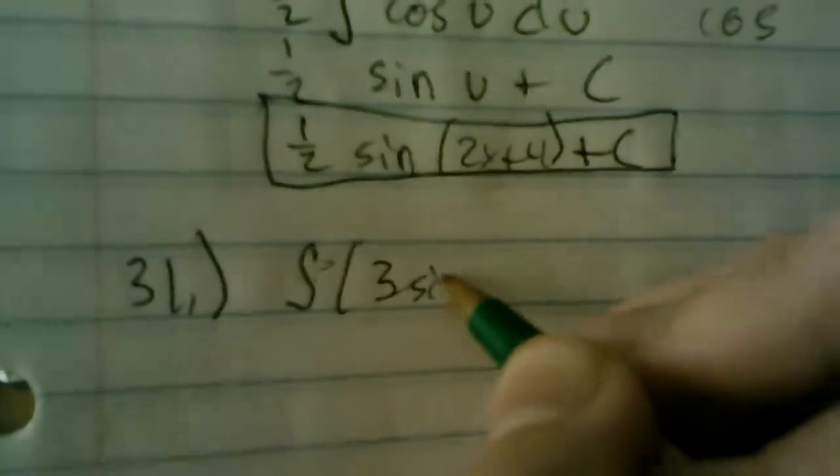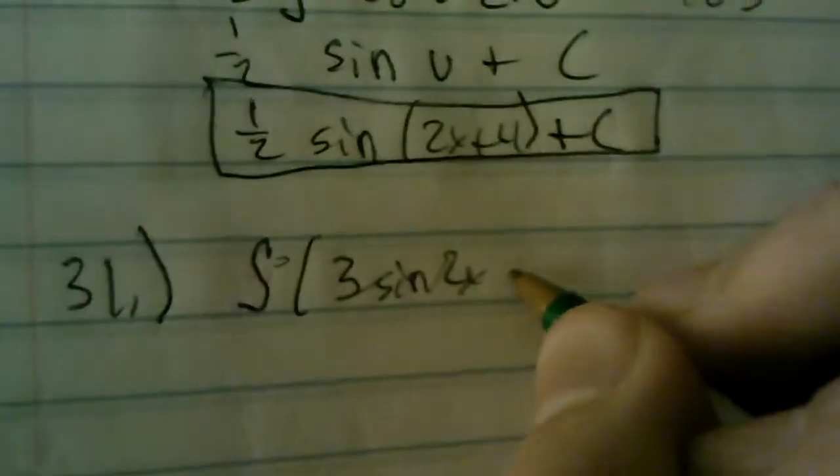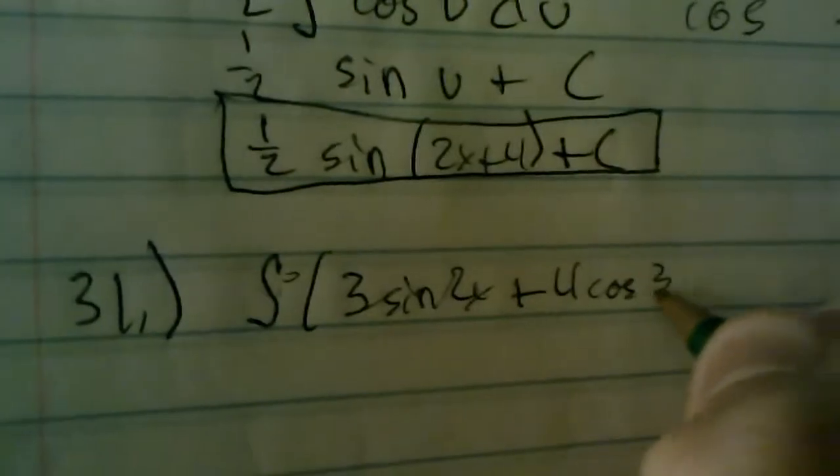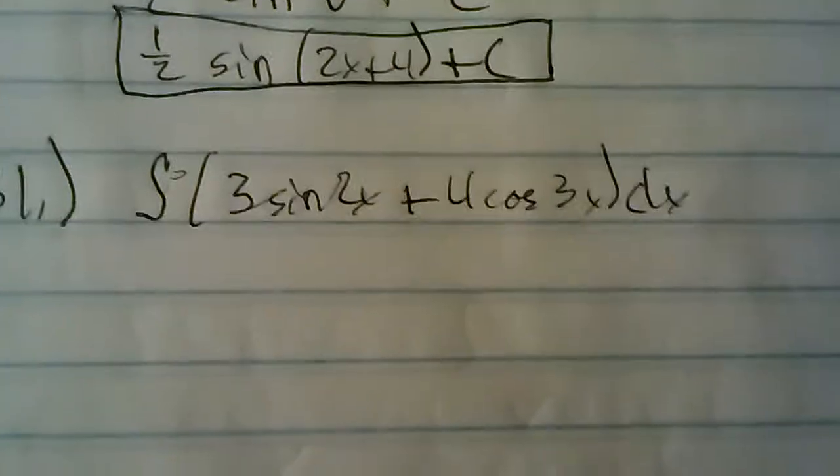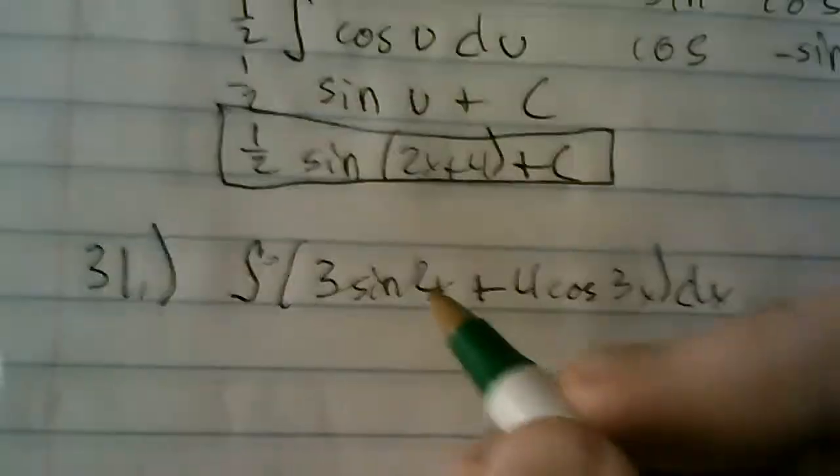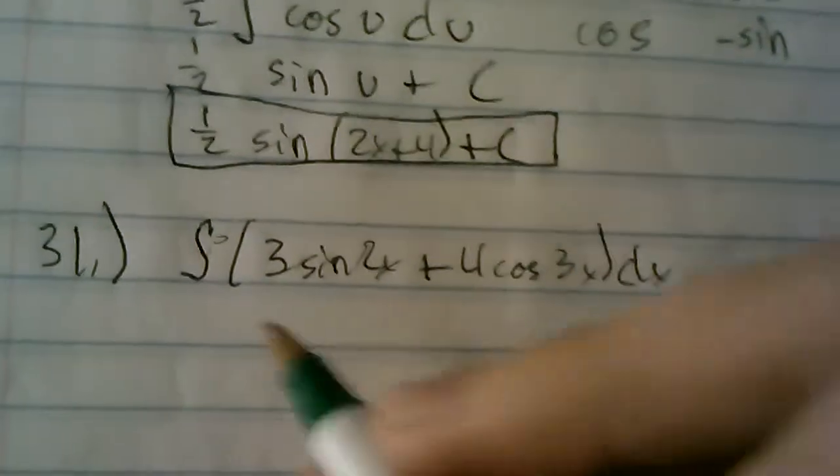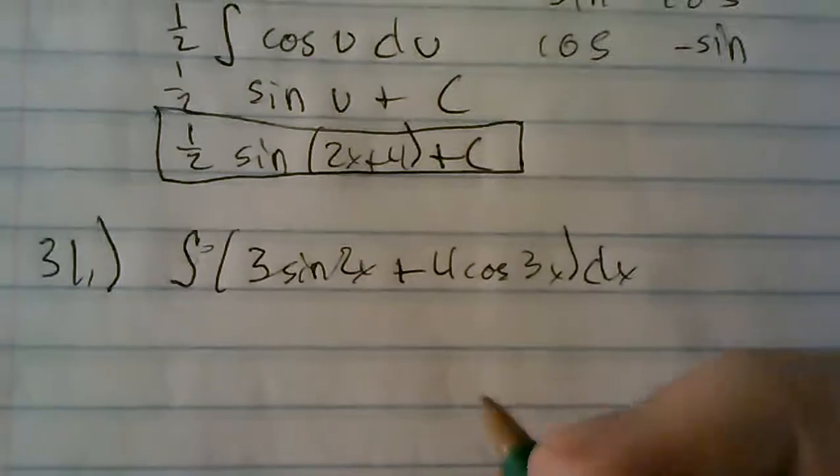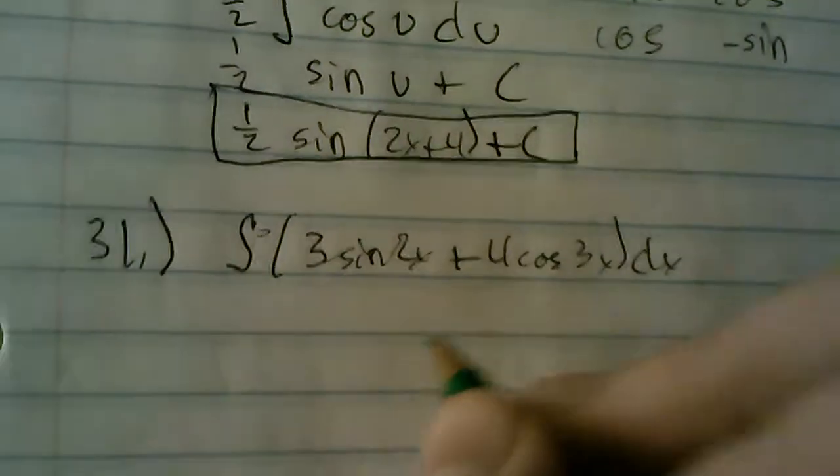So it wants the integral of 3 sine 2x plus 4 cosine 3x. My brother is shouting at the television in the other room. So, my apologies. So, right away it seems like you don't have the same term in here. So you can't use u for both of them. But one thing you can do when you're adding them is you can split them up.